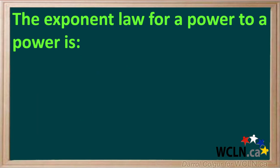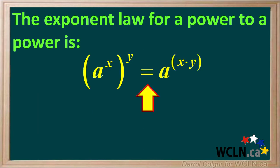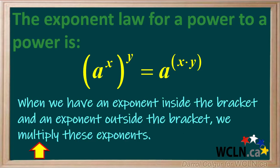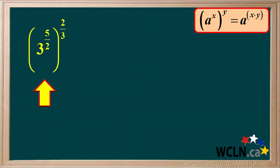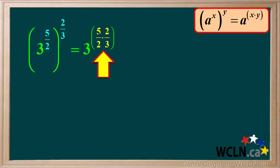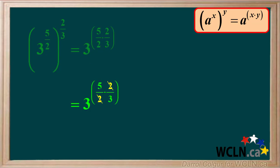The exponent law for a power to a power is: a to the power of x raised to the power of y is a to the power of x times y. In other words, when we have an exponent inside the bracket and an exponent outside the bracket, we multiply these exponents. We have 3 to the power of 5 over 2 raised to the power of 2 over 3. We multiply the exponents 5 over 2 and 2 over 3, and we can simplify this product by cancelling out the 2, giving us 3 to the power of 5 over 3.